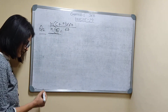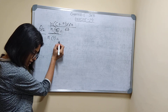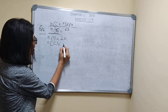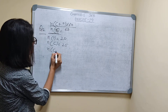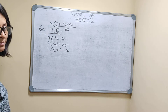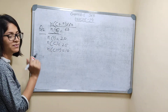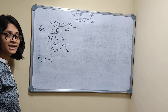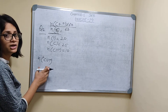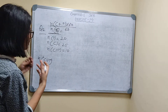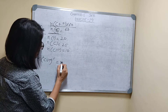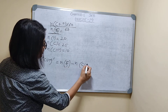N(ε) = 60, N(T) = 20, N(C) = 25, and N(C∩T) = 10. To find the number who play neither game, we need N(C∪T)′ — the complement of C∪T — which equals N(ε) − N(C∪T).